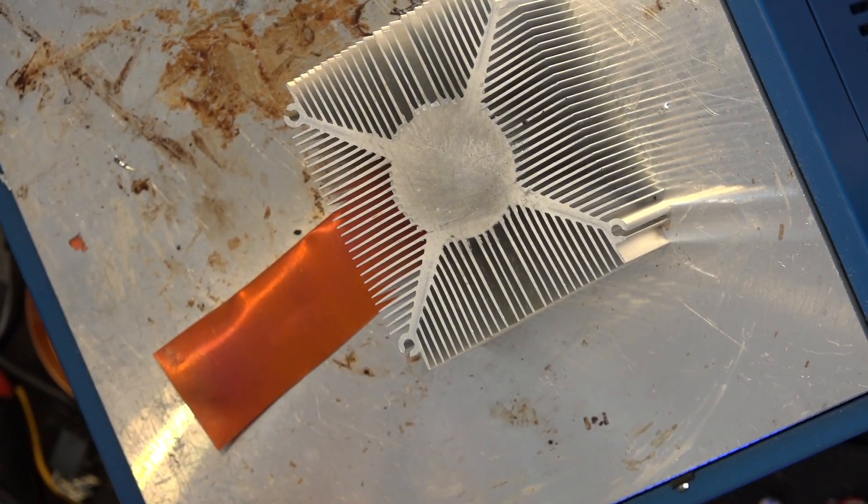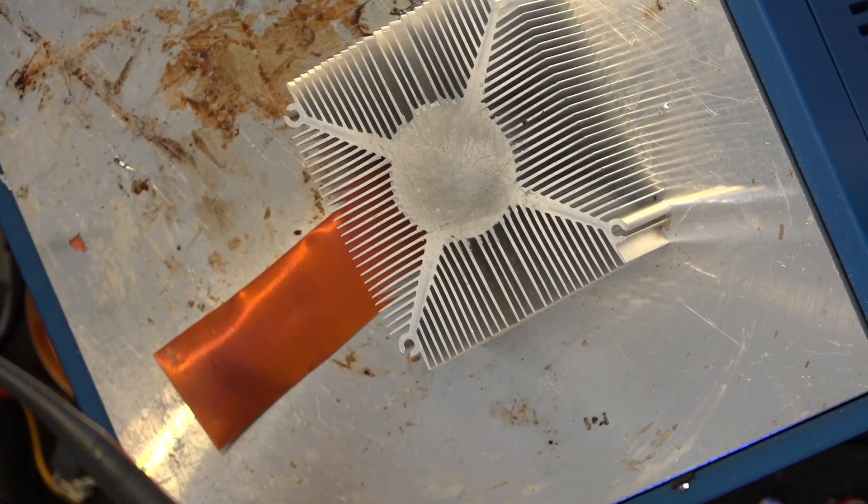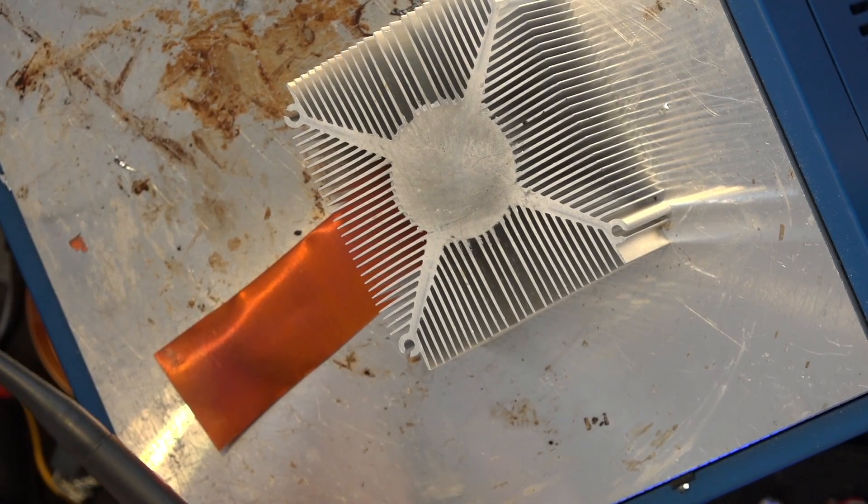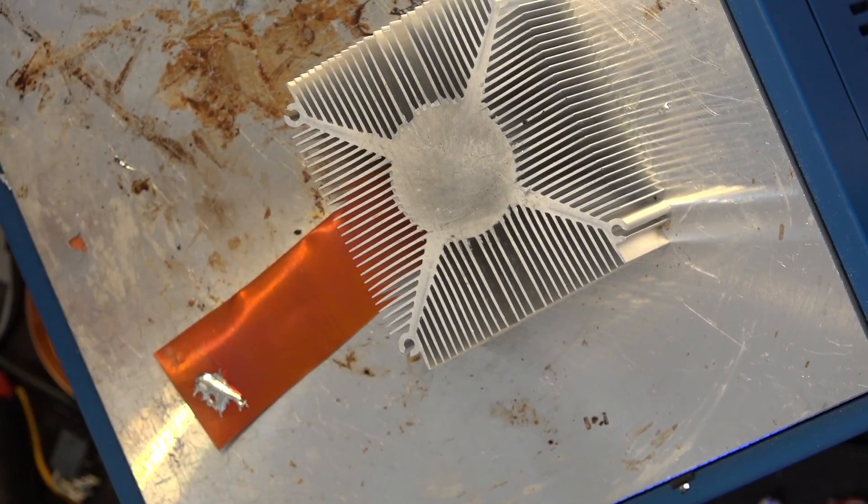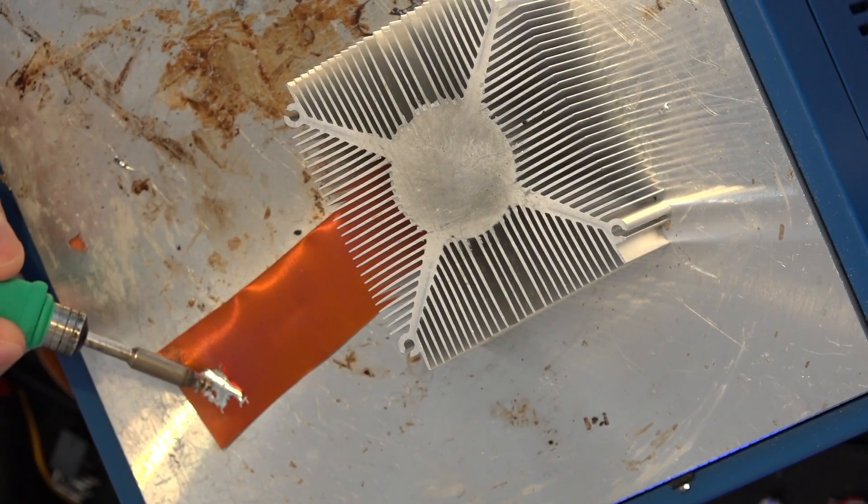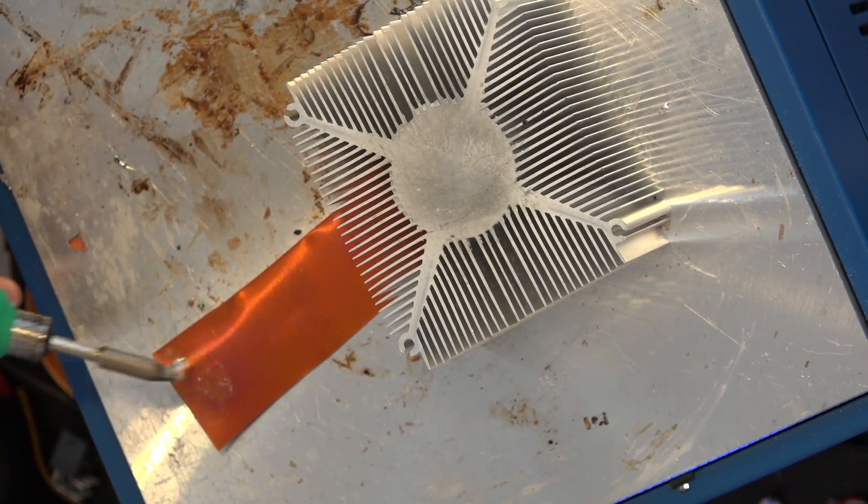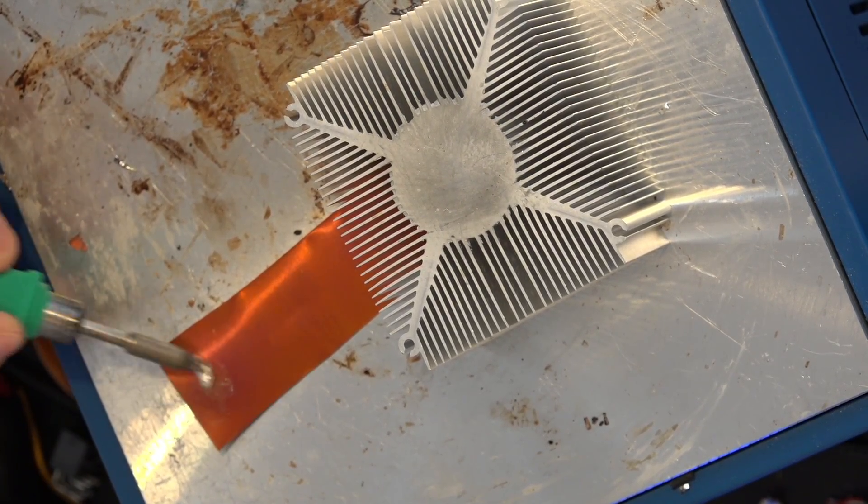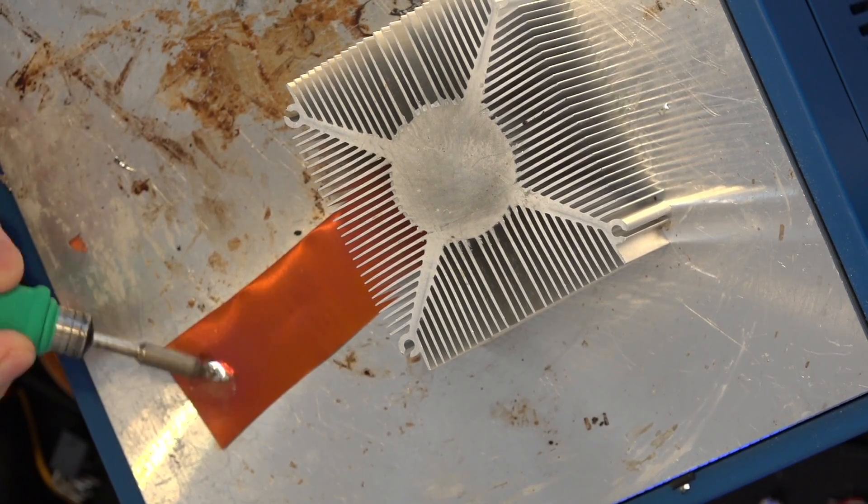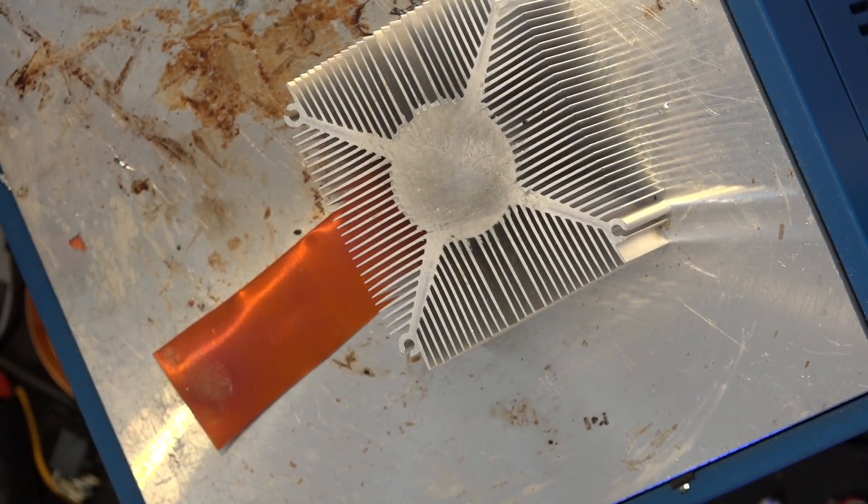So let's try and improve that a bit. Here's a great big blob of solder, and you can see just with the oxide layer on this plate, this is getting nowhere. So let's add some flux to this, shall we?